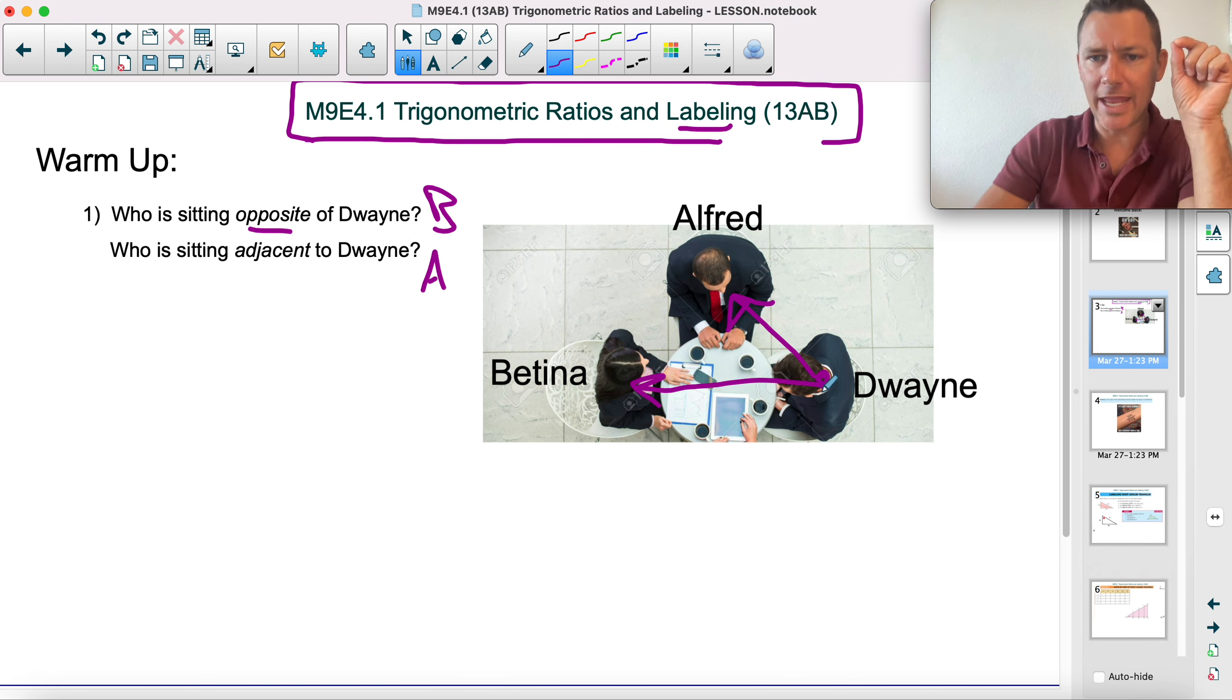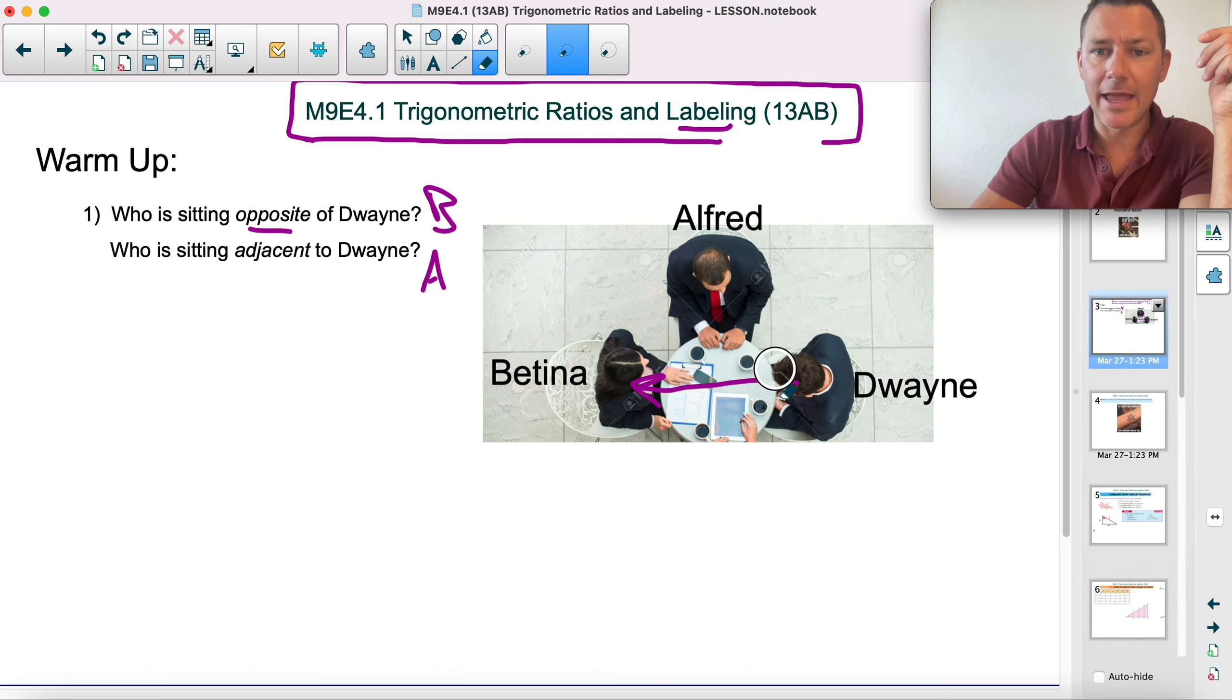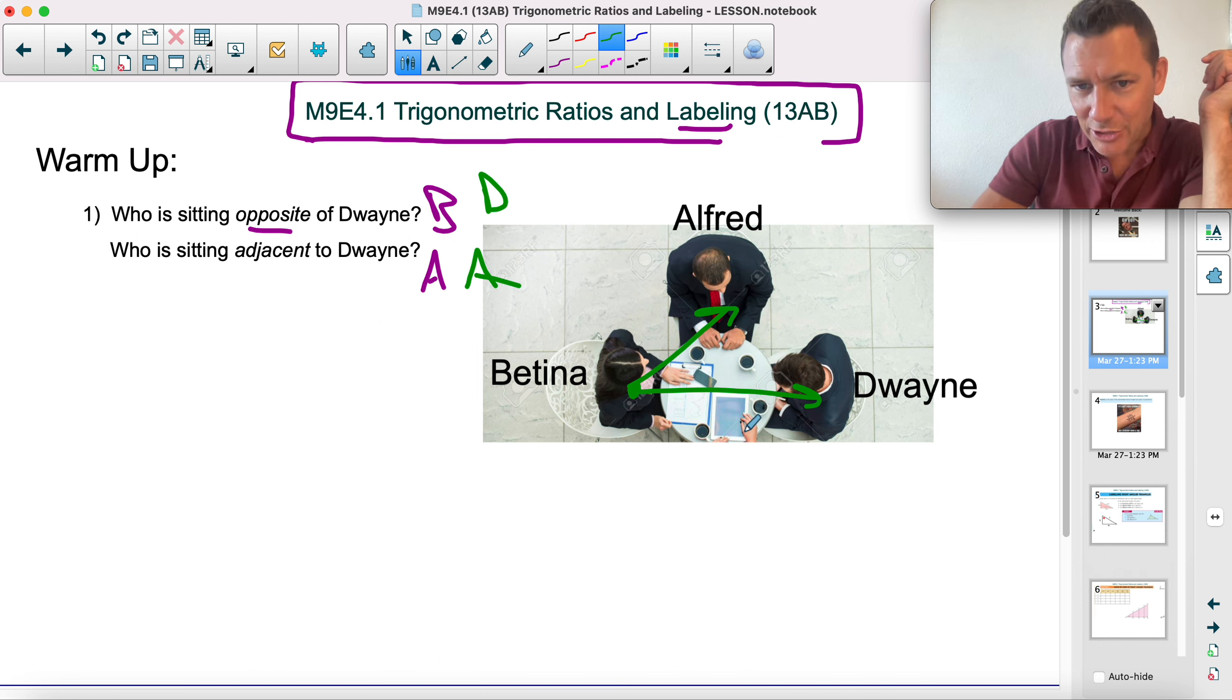If you're talking about Dwayne as your main individual, the person sitting opposite of Dwayne is Bettina, and the person sitting adjacent to Dwayne is Alfred. And if that makes sense to you, then trigonometry should be easy. That's the hardest part, I think, just looking at one angle and then deciding who's opposite and adjacent.